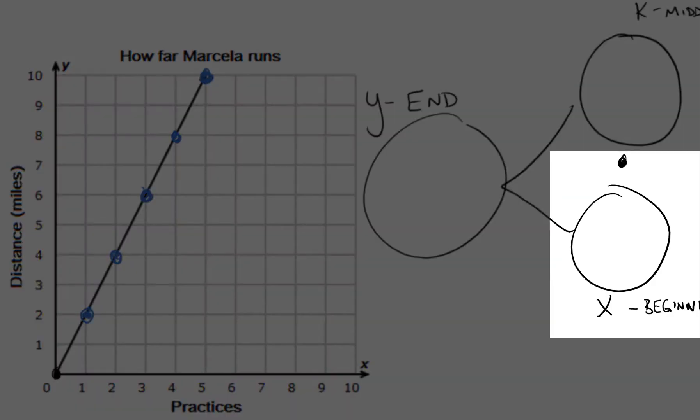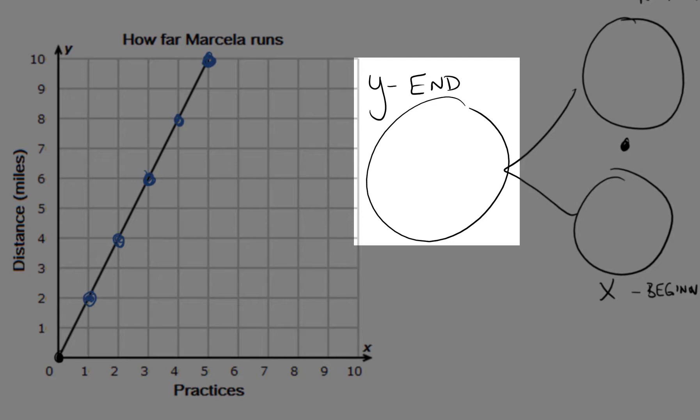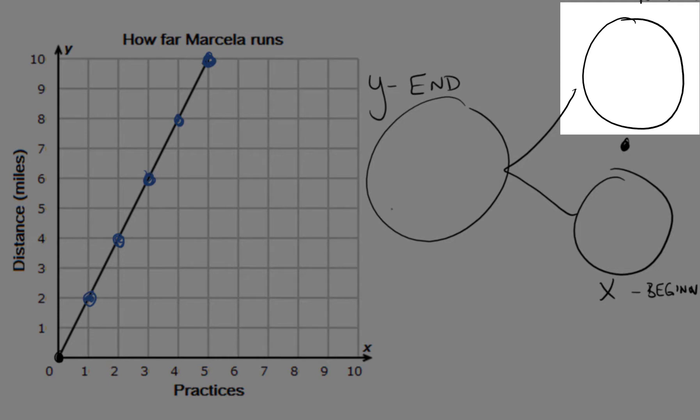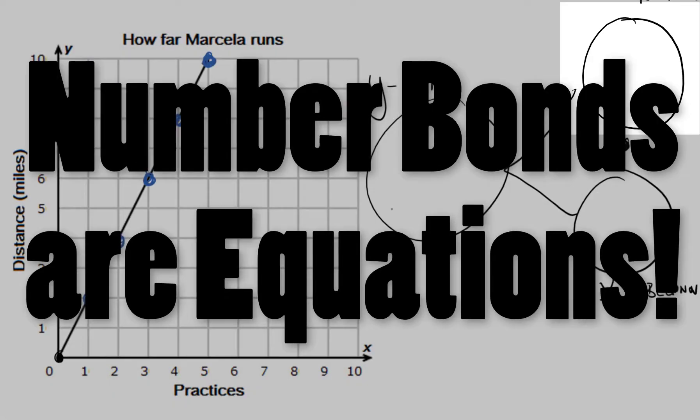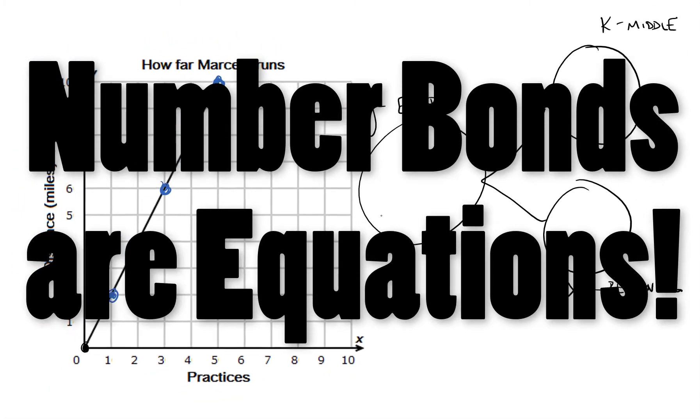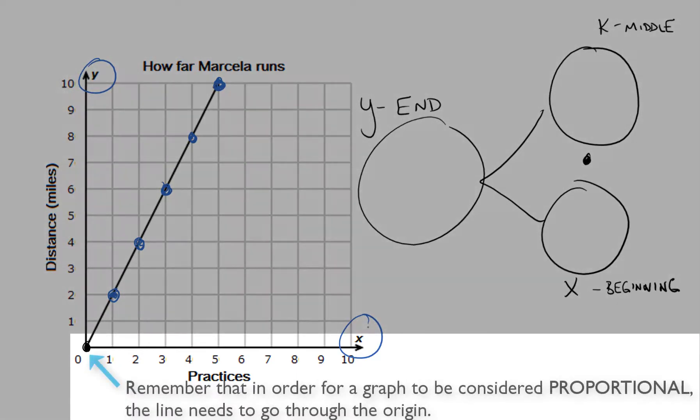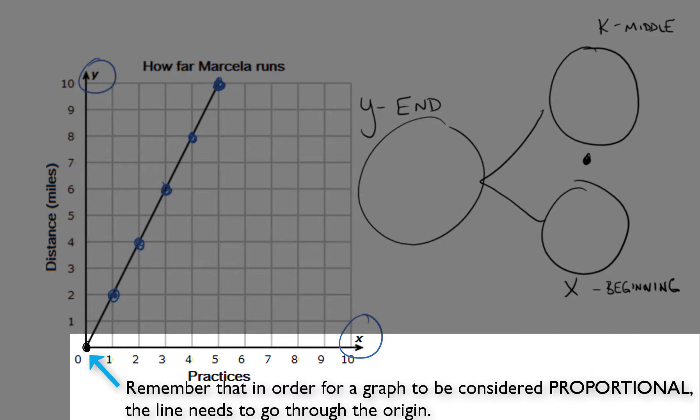I'm going to do a couple of these. If I pick any of these points, I can put it into my number bond and easily figure out the constant of proportionality, thus helping me write an equation that will symbolize this graph.